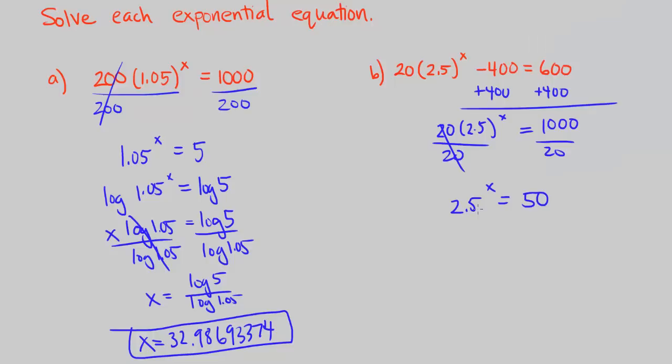Now we want to go ahead and apply log to both sides. Once we do that, we can use the law of logs to bring the exponent down. So that becomes x times log of 2.5 equals log of 50. Divide by log of 2.5 on both sides. We get x equals log of 50 divided by log of 2.5.